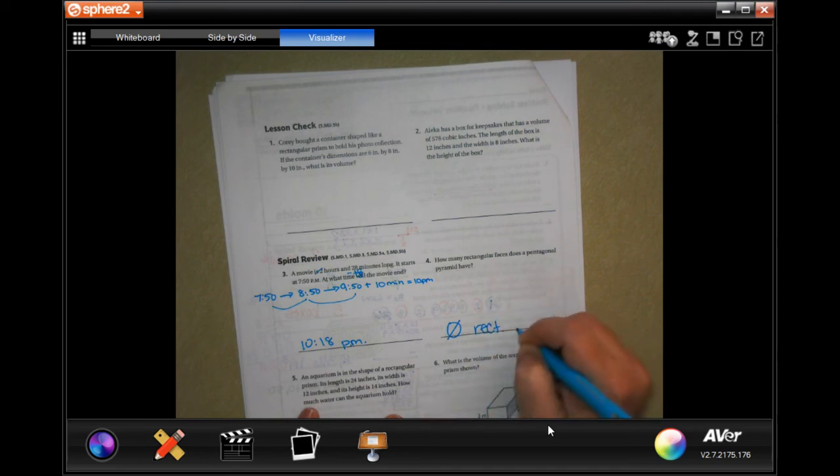How many rectangular faces does a pentagonal pyramid have? Well it doesn't have any rectangular faces, they're all pentagon, so zero rectangular faces.